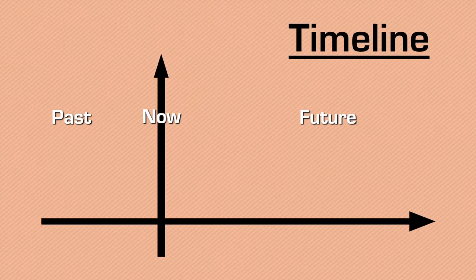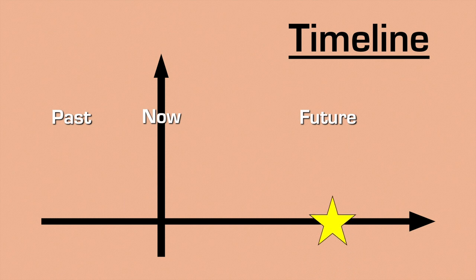First we're going to take a look at the timeline. We have the horizontal line that represents the past on the left-hand side, and on the right-hand side of the vertical line is the future. The vertical line represents now. So we will find the future simple in the future, of course.